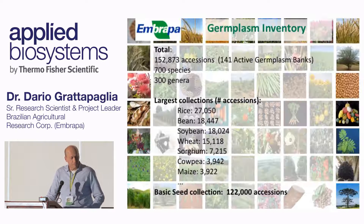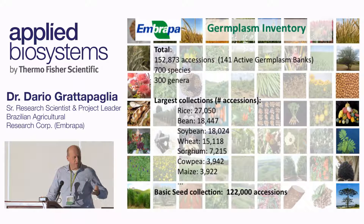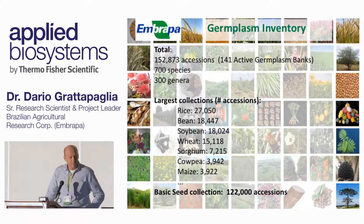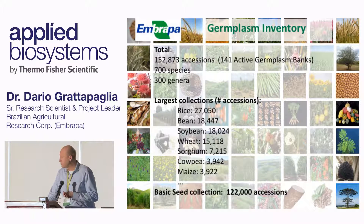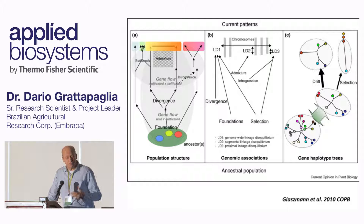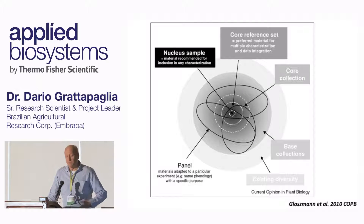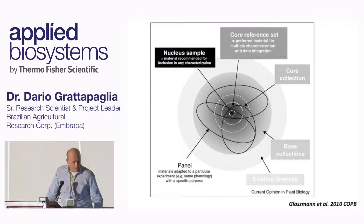At Embrapa — which would be the equivalent of the USDA ARS, the governmental organization — we have over 150,000 accessions from 140 germplasm banks covering 700 species. We have a large collection for some of the main species, but we also have several hundred banks for not-so-well-known species. A big goal is to actually genotype all of them, organize these collections, develop all kinds of studies on the richness of these collections, and develop core collections for investing in phenotyping in a much more efficient way.